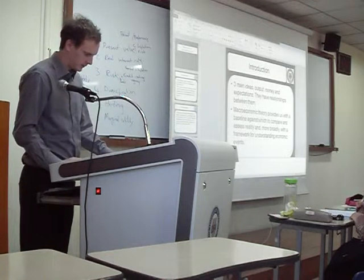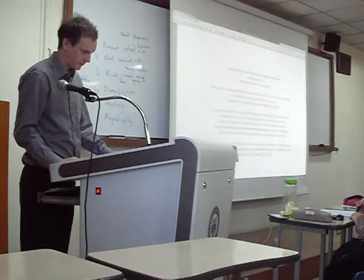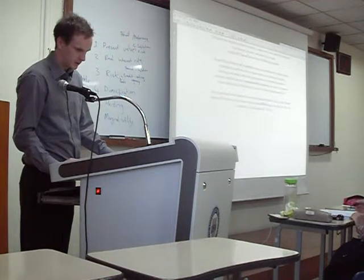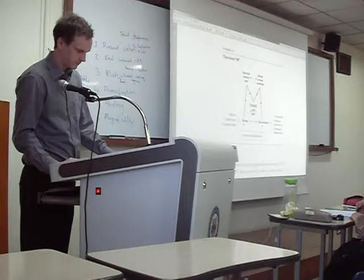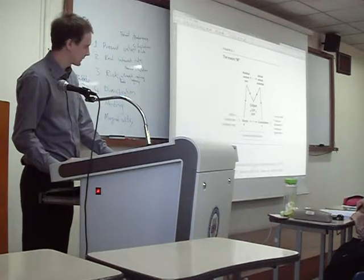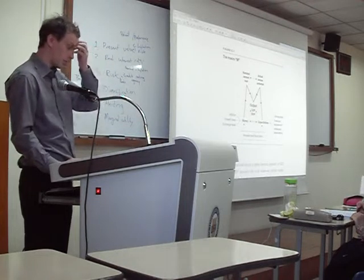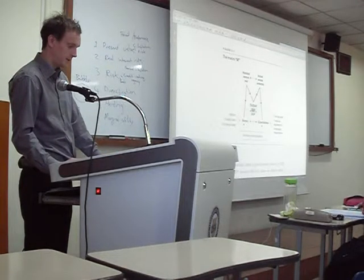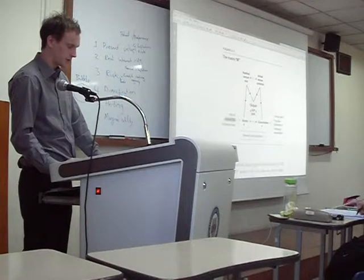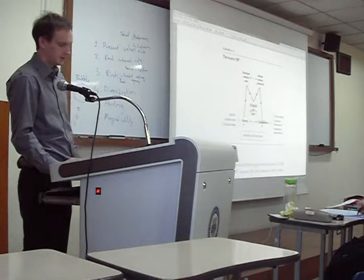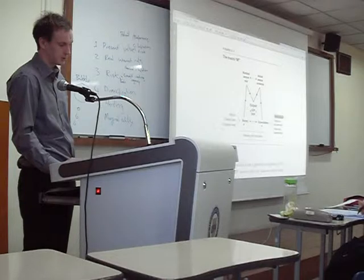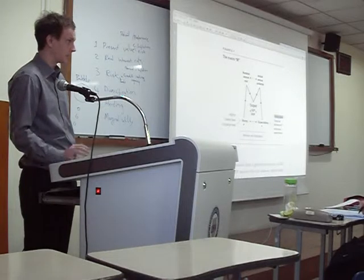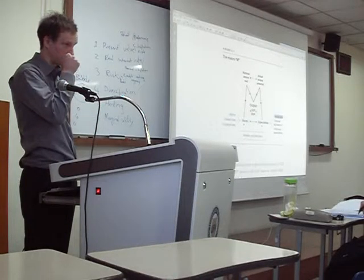Looking at the document, we have a graph showing money, expectations, and output. Output is measured with GDP. Money covers inflation, interest rates, and exchange rates. Expectations cover animal spirits — like herding. Herding is an animal spirit because people are not acting rationally. They're acting like animals — irrational exuberance.